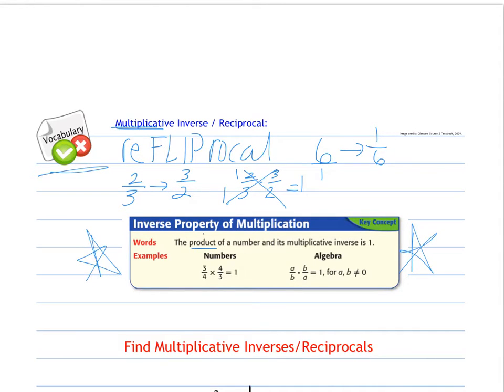So this is the inverse property of multiplication. The product, meaning the multiplication of a number and its multiplicative inverse is one. So for example here, three-fourths times its multiplicative inverse or reciprocal of four-thirds is one. Because you would get three times four, which is twelve, over twelve, which is one.